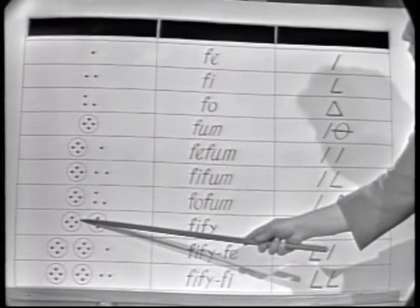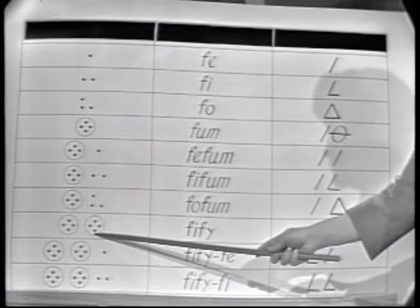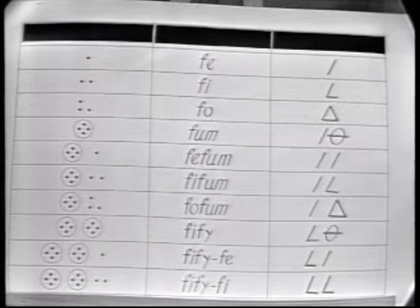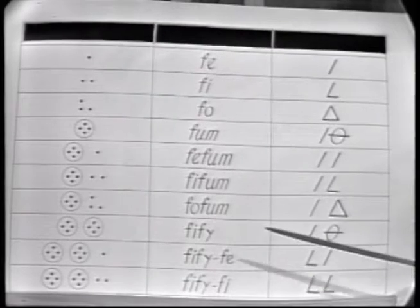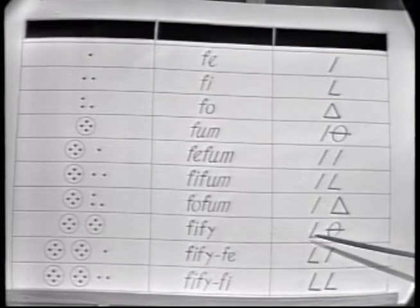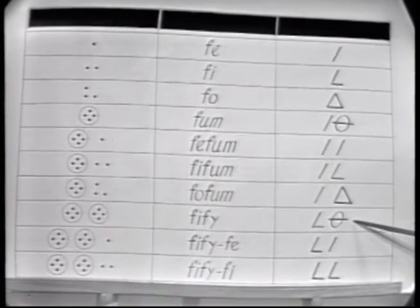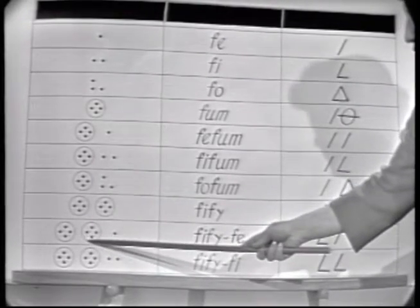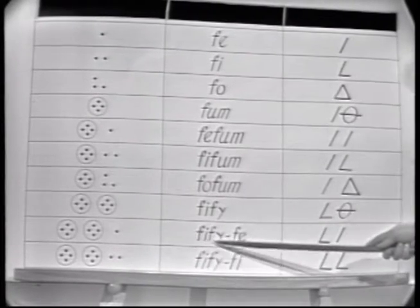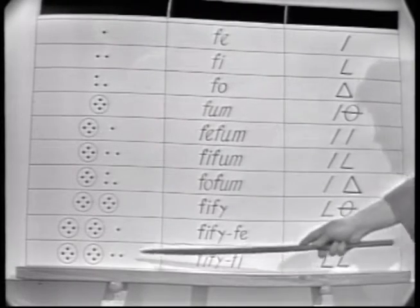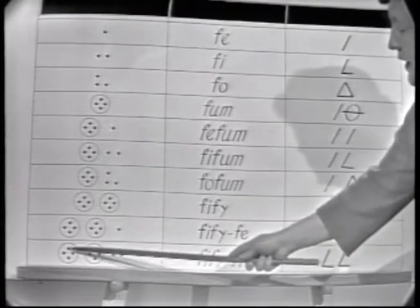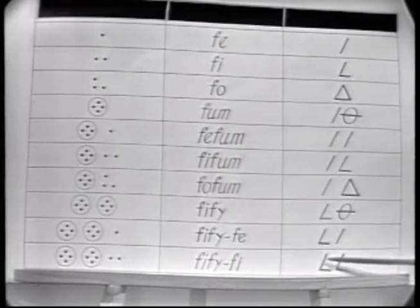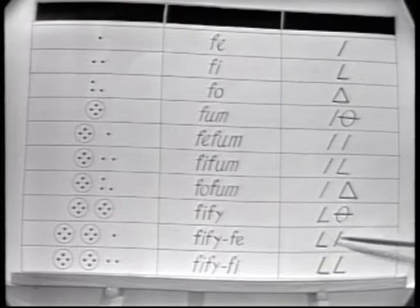What happens here? We see now that we have four fums — much as we might have two tens. Following the pattern of ten, twenty, thirty, let's call this 'fi-fee.' The numeral shows the number of fums and the number of fees. Adding another unit: 'fi-fums' and 'fi' more — 'fi-fee-fi' — and the numeral showing the number of fums and the number of fees.